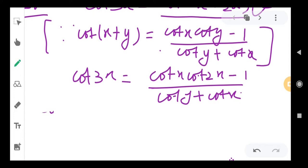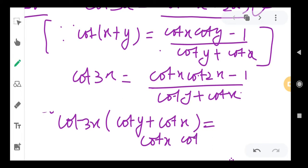First of all, let's do cross multiplication. So cot 3x times (cot y + cot x) equals cot x cot 2x minus 1. So now let's open this bracket.